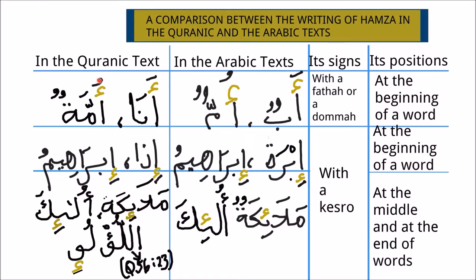This position of Hamza changes when it takes a Kasra and it starts a word, in both the Quranic and Arabic text. For example, in the Arabic text, Ibtun, which means needle, starts with a Hamza which is written below an Alif, because the Hamza carries a Kasra sign.